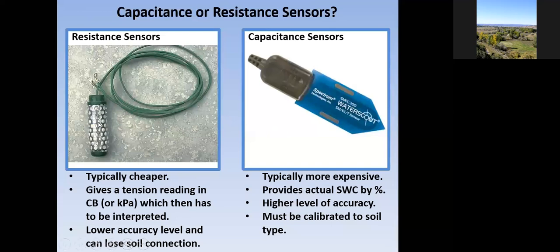Resistance sensors have a lower accuracy level and can lose soil connection. If you install one at a foot deep and the ground gets very dry, a void can form around the probe, and it loses connectivity. About one in ten you might have a problem. When people lose connectivity, I tell them to dump a couple of five-gallon buckets of water on the ground to try to re-establish that connectivity before re-installing new probes. You don't want them to get too dry.